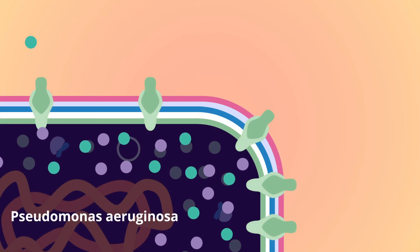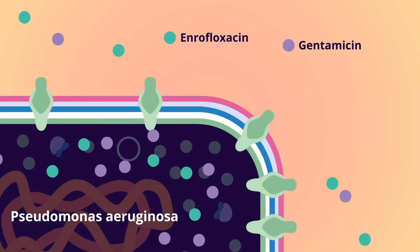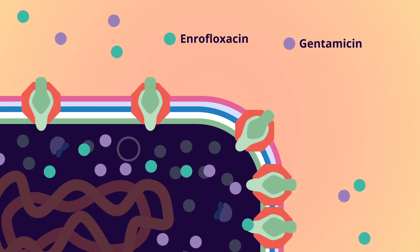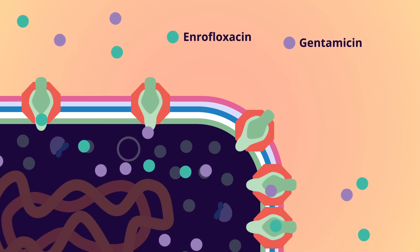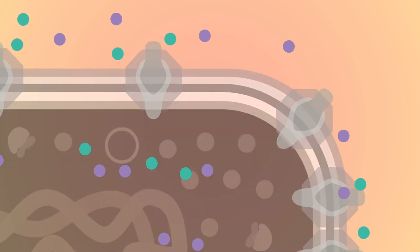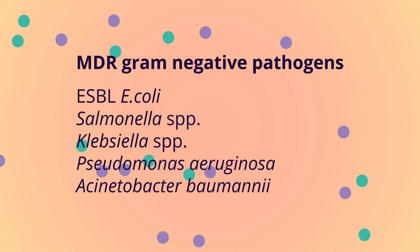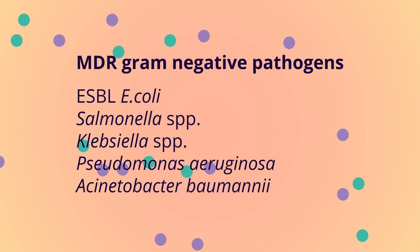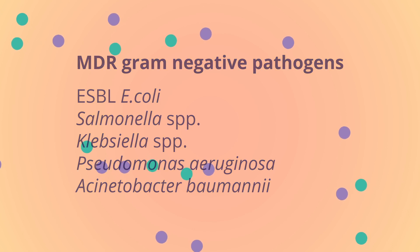Studies in canine otitis externa caused by Pseudomonas aeruginosa have shown that the use of efflux pump inhibiting agents, such as TRIS-EDTA, can increase bacterial susceptibility to aminoglycoside and fluoroquinolone antibiotics. However, research into efflux pump inhibitors has not yet identified any safe and effective agents for systemic use — things that could be used to treat serious multi-drug-resistant gram-negative infections. Such infections remain one of the greatest challenges facing modern medicine.